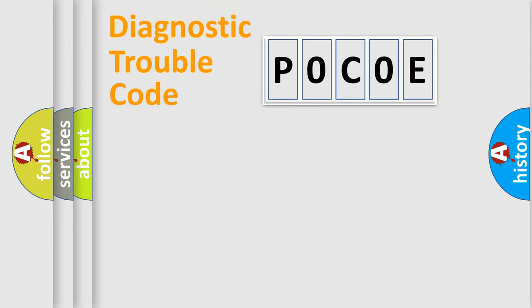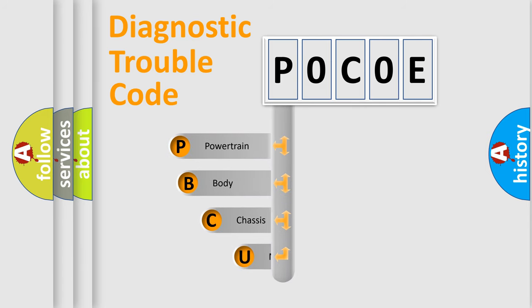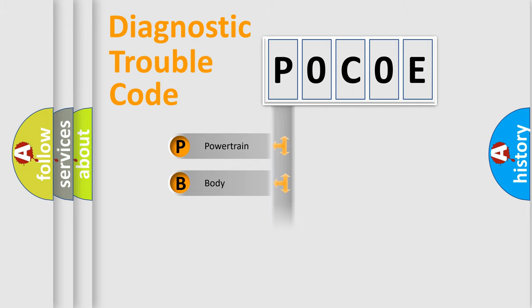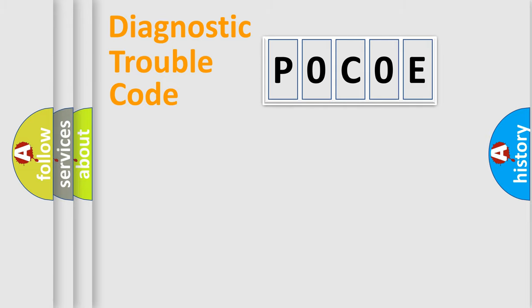First, let's look at the history of diagnostic fault code composition according to the OBD2 protocol, which is unified for all automakers since 2000. We divide the electric system of the automobile into four basic units: Powertrain, Body, Chassis, and Network. This distribution is defined in the first character of the code.